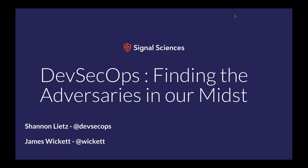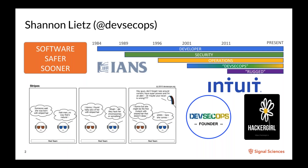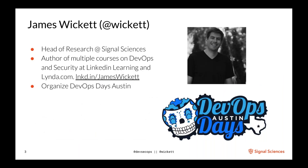James: Thank you everyone for showing up — we're really excited about this topic. Shannon, do you want to start us off with a quick intro? Shannon: I've been working in this industry for about 30 years. I'm the primary founder of DevSecOps and Hacker Girl, I work at Intuit, I'm an IANS faculty member, I like to build comic strips on the side, and I started out as a developer.